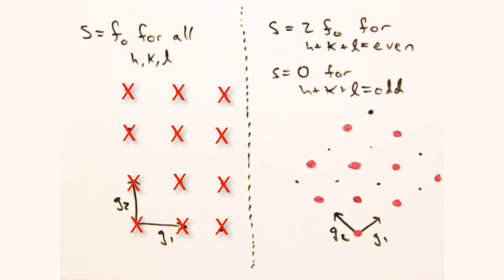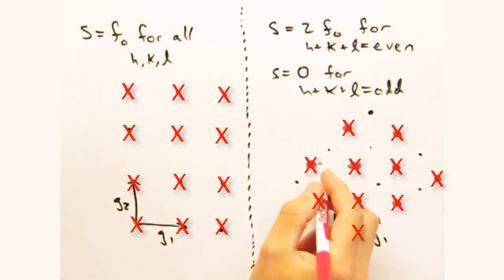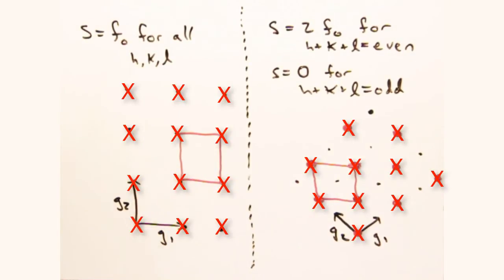So now let's mark an x for every expected peak position for this case. And we can see the spacing of expected peak positions is the same in both cases.